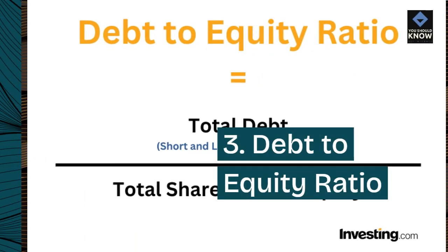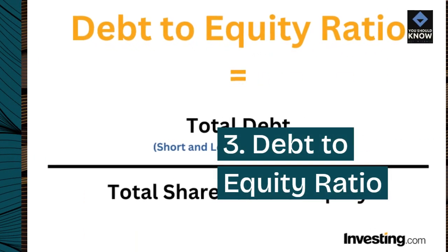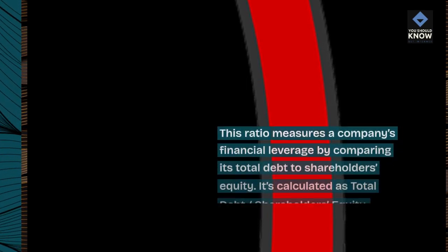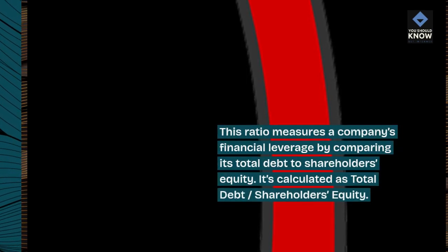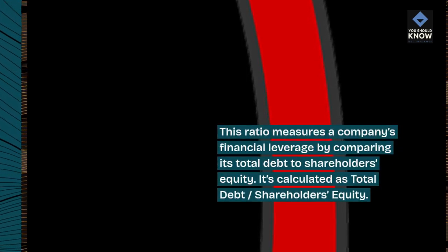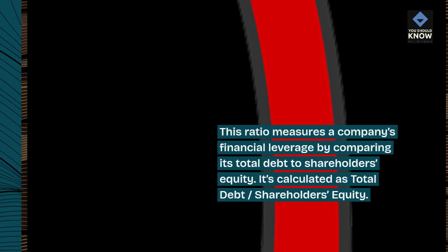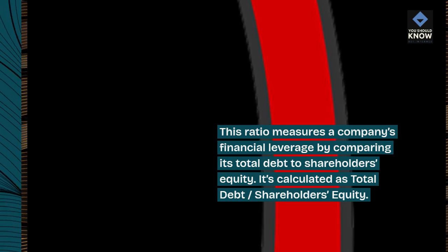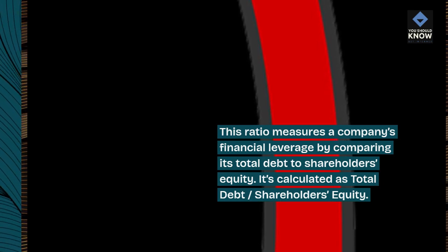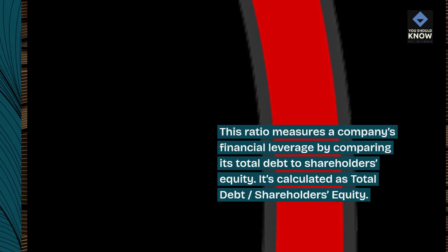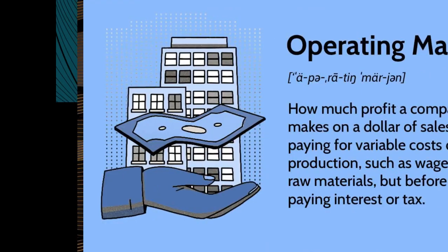3. Debt to equity ratio. This ratio measures a company's financial leverage by comparing its total debt to shareholders' equity. It's calculated as total debt divided by shareholders' equity.